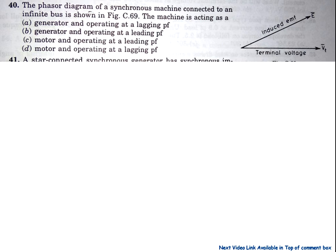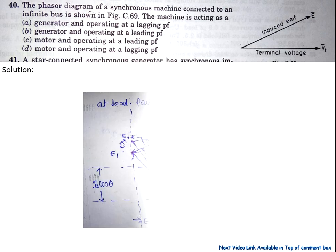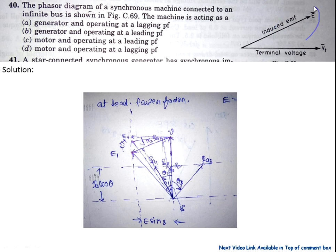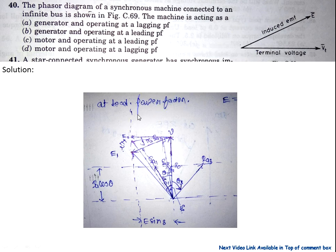Now question number 40: The phasor diagram of a synchronous machine connected to an infinite bus is shown. This is the power factor diagram at leading power factor for the synchronous generator. E1 and E2 are the EMFs at leading power factor, which are less than terminal voltage V. As shown in the phasor diagram, E is less than the terminal voltage, so the machine is operating as a generator at leading power factor. Answer option B is correct.